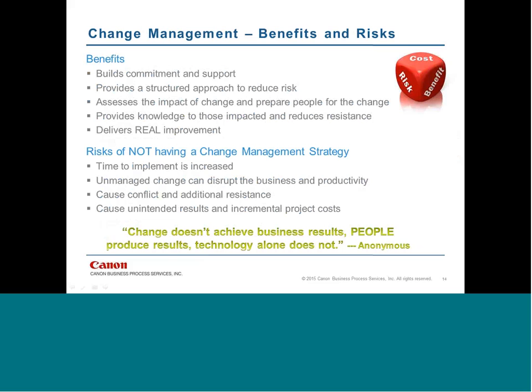By now it should be clear why we need change management and a strategy around it to ensure a transformation initiative can be successful. The most important point is that you need to build commitments — and to do that you have to prepare people for the change, and if you can do that, you're going to deliver real improvements. What happens if you don't have a change management strategy? Increased costs, lack of engagement, conflict, and slower processes. If you've invested $140 million into an ERP implementation and people don't know how or want to use it, you've just wasted $140 million. Change itself doesn't achieve business results — people produce results. Technology alone does not.